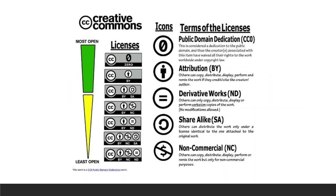Here are the different creative commons licenses that can have different combinations of attributes. If it's zero (CC0), that basically means you don't have to put any attributions on it. Commonly you'll see BY, which means you need to credit or cite the creator or author — you've got to put an attribution if there's a BY. There's also derivative, which indicates whether or not you can change the work or if you need to use it as-is. Share-alike means if you're going to use someone's work, you're expected to pay it forward and put a creative commons license on your version too. And non-commercial (NC) means the creator doesn't want you making money off their work.